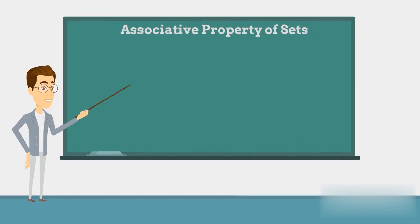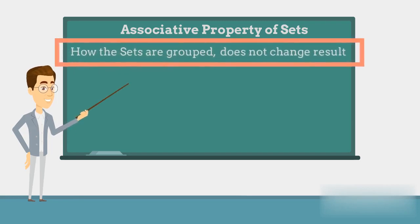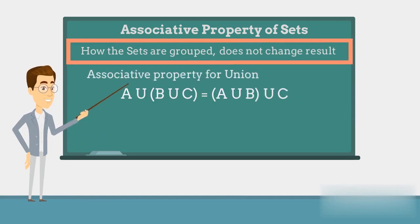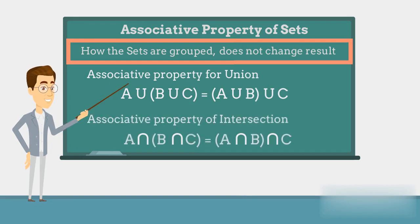The associative property for union and the associative property for intersection says that how the sets are grouped does not change the result. In other words, whether we write A union (B union C) or (A union B) union C, it is the same. Similarly, if we write A intersection (B intersection C) or (A intersection B) intersection C, it is the same.